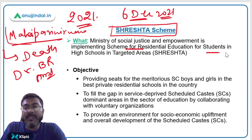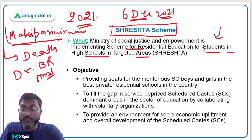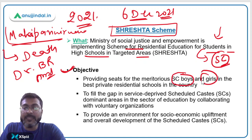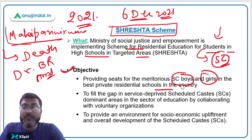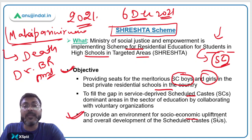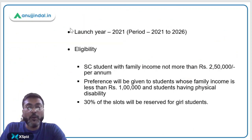The full form of Shresth is Scheme for Residential Education for Students in High Schools in Targeted Areas. As the name suggests, this scheme provides residential education to students from the SC category. Its objective is to provide meritorious SC boys and girls seats in the best private residential schools in the country, filling the educational gap in SC-dominated areas and promoting socio-economic upliftment and overall development of Scheduled Caste people.